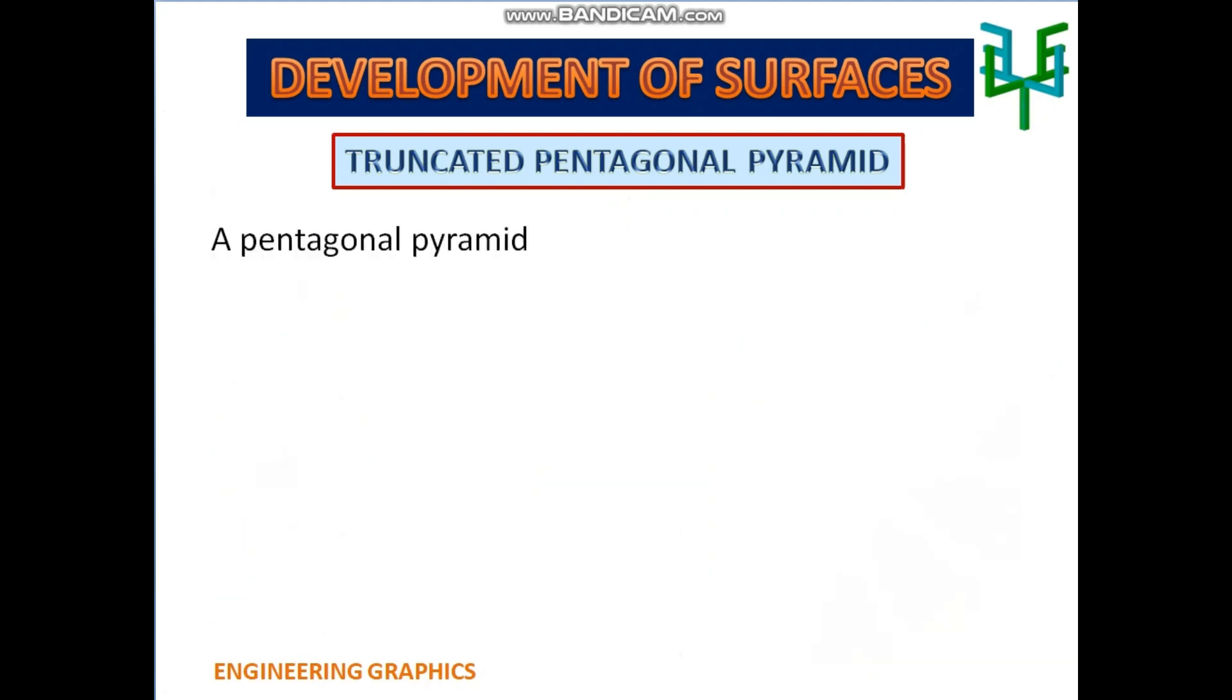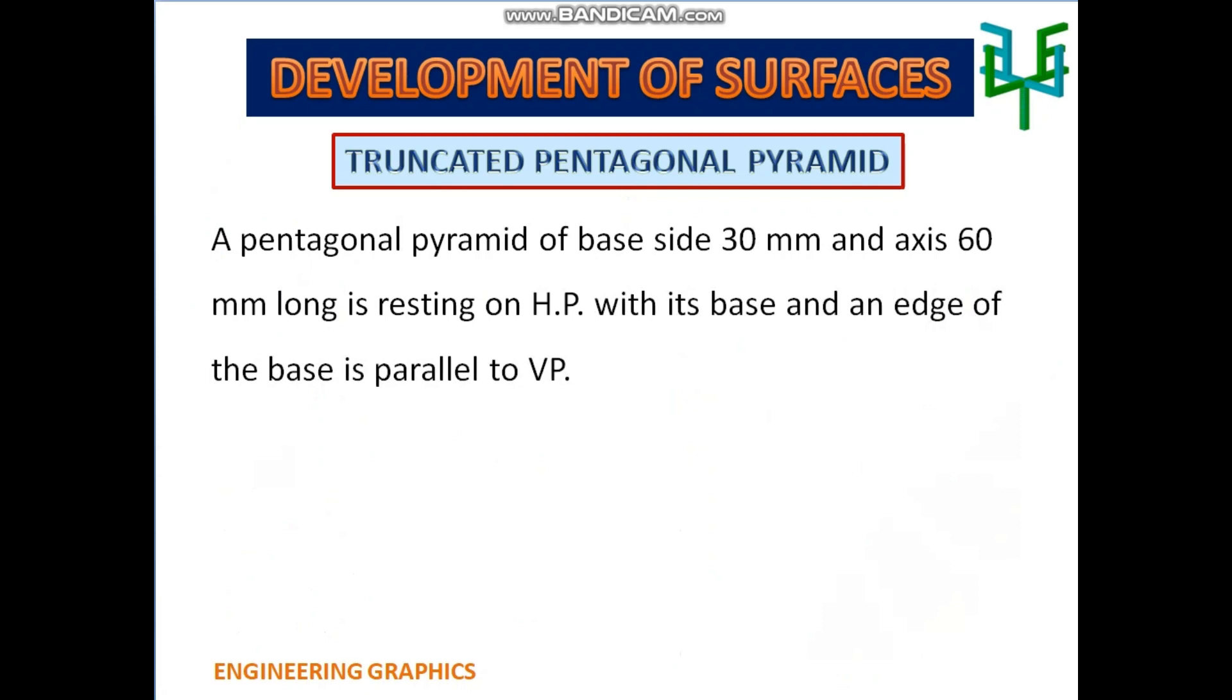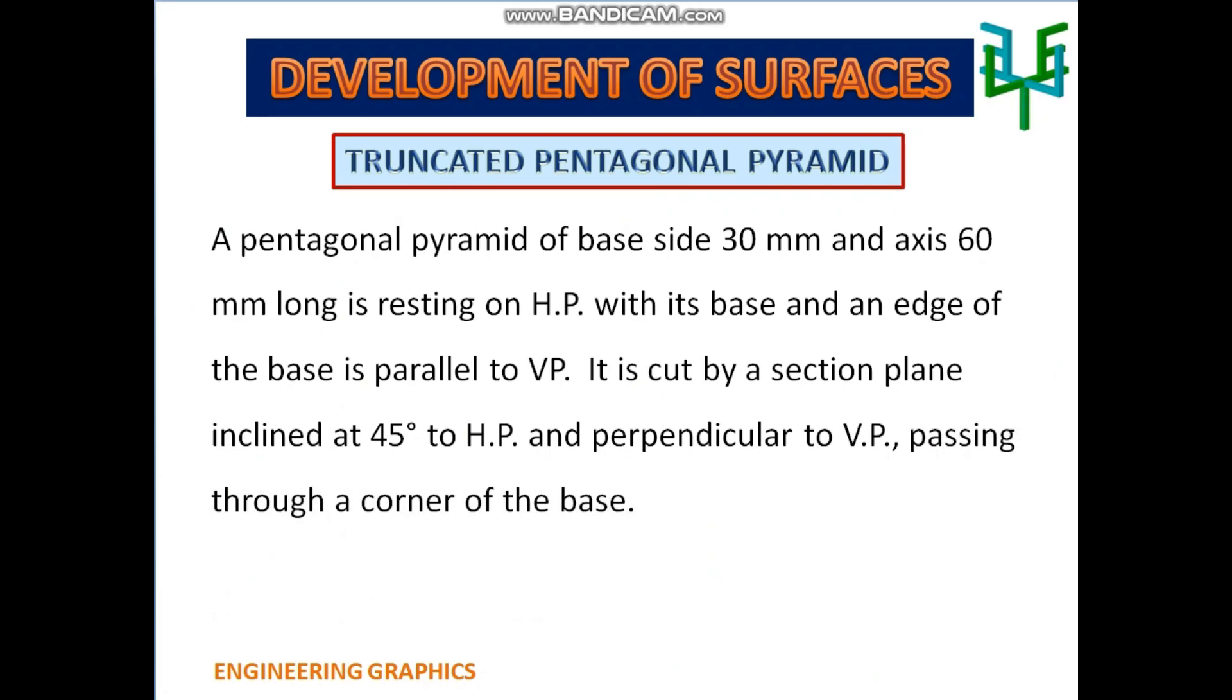A pentagonal pyramid of base side 30 mm and axis 60 mm long is resting on HP with its base and an edge of the base is parallel to VP. It is cut by a section plane, inclined at 45 degrees to HP and perpendicular to VP, passing through a corner of the base. Draw the development of the lateral surface of truncated pyramid.